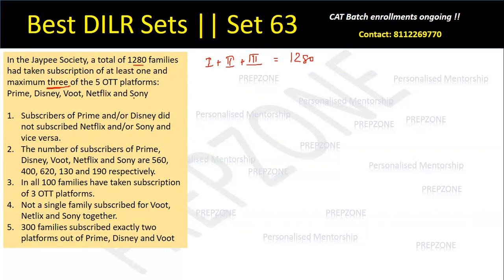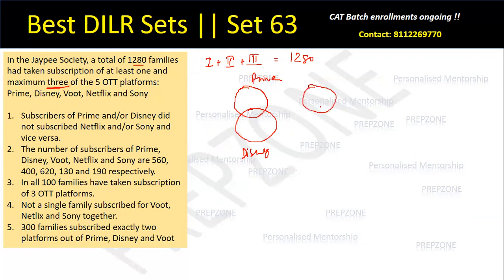What more is given to us is that subscribers of Prime and/or Disney did not subscribe to Netflix and not Sony. So I'll draw the Venn diagram in the easiest format I can. Let's say this is Prime, and this is Disney — there could be some sort of overlap. Subscribers of Prime and/or Disney did not subscribe to Netflix and not Sony, meaning Netflix and Sony have no overlap with the Prime/Disney group. Bootz is left out and can overlap with any of the individual OTT platforms — nothing is given. So I draw a generic diagram where Bootz overlaps with all the individual OTT platforms. This becomes my Venn diagram.